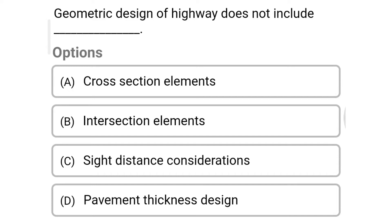Hello friends, welcome to Student Engineering Exam. Today we're going to see the MCQ related with highway engineering in the topic of highway transportation design. The first question: geometric design of highway does not include — option A: cross section elements,